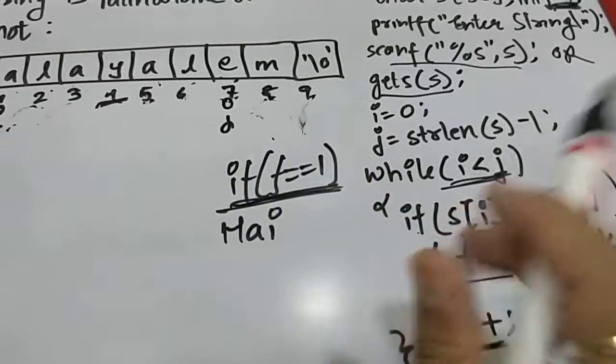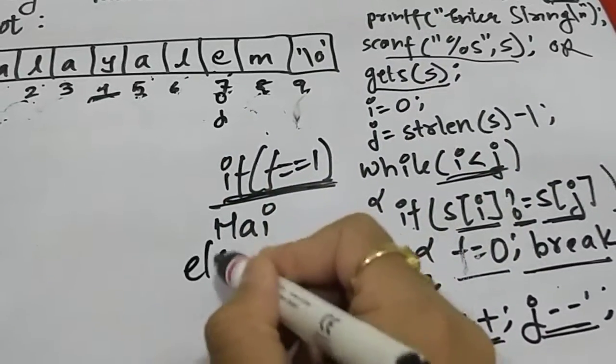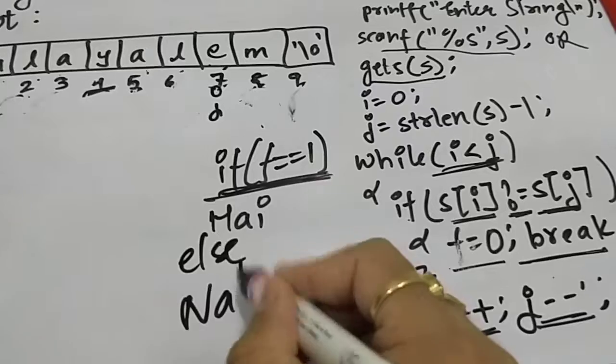So the loop will break here. So in the if, value of one nahi rahega, value of f is zero. So if value is zero, then we will say it is not a palindrome.